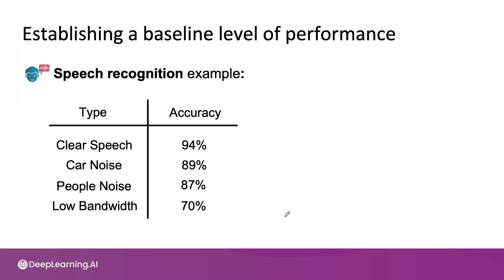Let me use a speech recognition example. Let's say you've established that there are four major categories of speech in your data: clear speech, which is when someone speaks without much background noise; speech with car noise in the background; speech with people noise in the background, as if they're outdoors with other people talking; or speech on a low bandwidth connection, like using a cell phone with a very bad connection. If your accuracy on these four categories is 94%, 89%, 87%, and 70%, you might be tempted to say: it does worse on low bandwidth audio, so let's focus our attention on that.